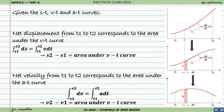Graphically, we consider the position-time curve. The slope of the s-t curve is defined as ds over dt. So if we take a given point on the curve, we can determine the speed and velocity at that point.